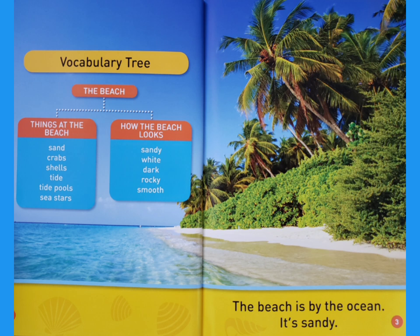How the beach looks: Sandy, gray, dark, rocky, smooth. The beach is by the ocean. It's sandy.